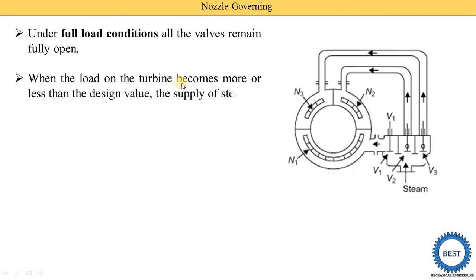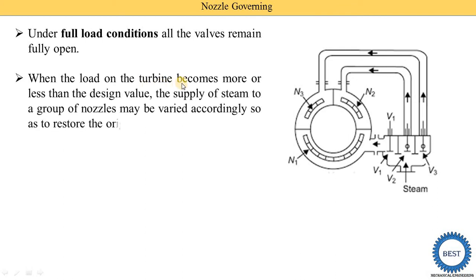When the load on the turbine becomes more or less than the design value, the load changes because when we switch off or switch on a few electrical appliances at home, the load changes on the generator as well as on the turbine. When the load is increased, the speed of the turbine is reduced and we need to supply more steam. When the load is reduced, the speed of the turbine is increased and we need to supply less steam — meaning we need to turn off a few nozzles, so the steam supply to a group of nozzles is changed accordingly.